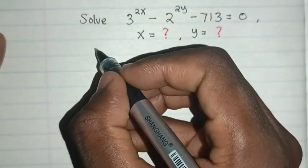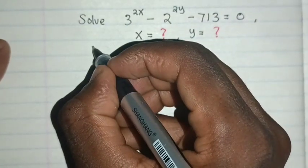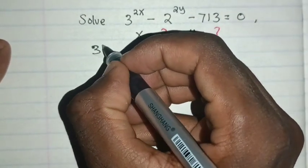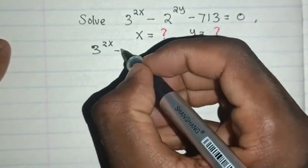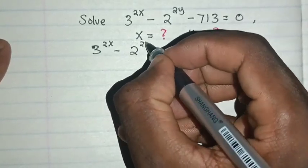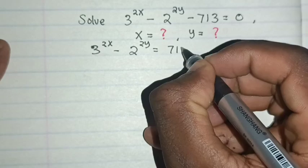How can we solve for x and y in this equation? Let's see. So our equation will be 3^(2x) - 2^(2y) = 713.